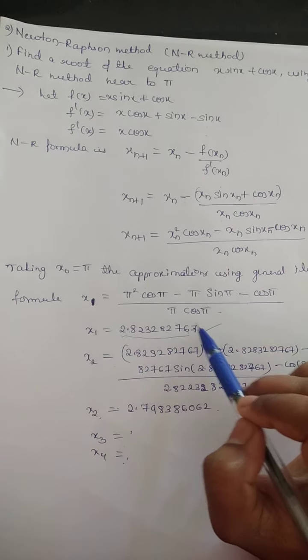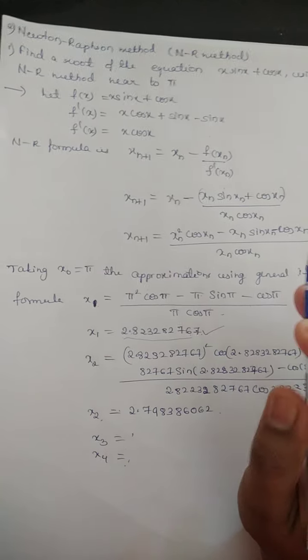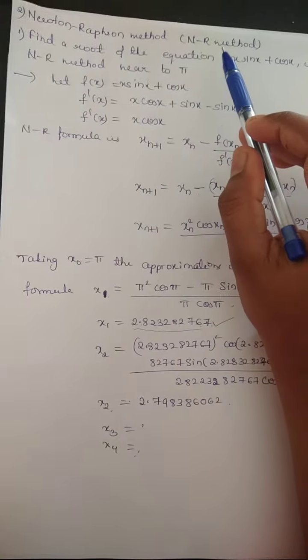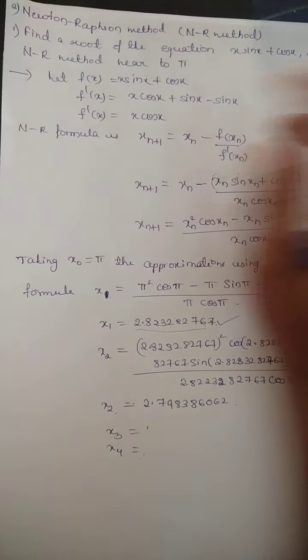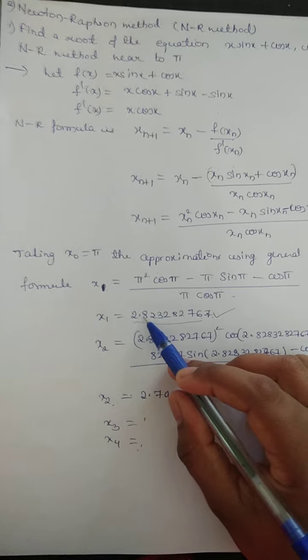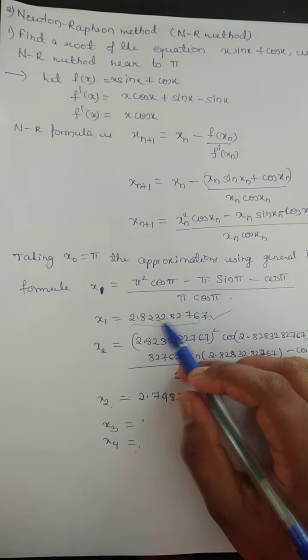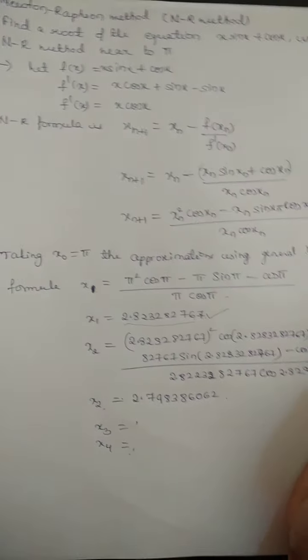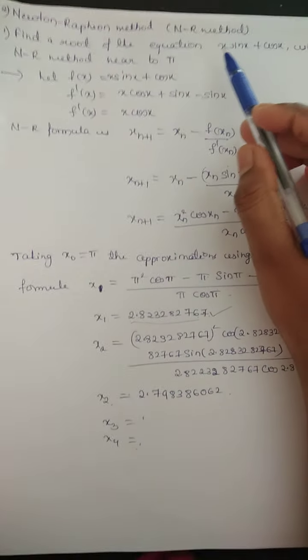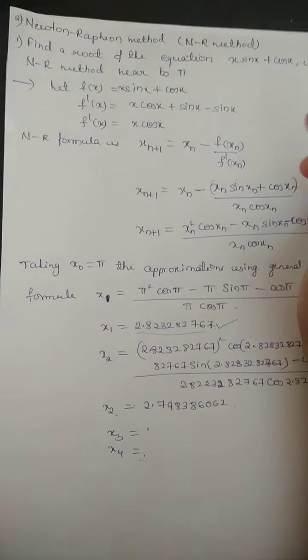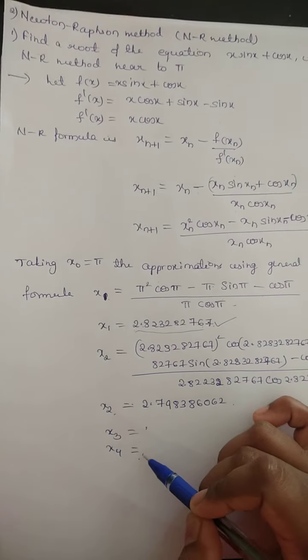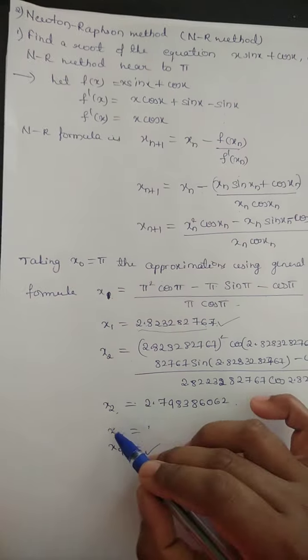After the decimal point I have taken 9 digits. Sometimes they have not mentioned in this problem. Sometimes they mention correct to 4 decimal places, correct to 5 decimal places. If not mentioned, you can take 4 decimal places. That is enough. And sometimes they mention up to 4 iteration or 5 iteration. Here it is not mentioned like that, so you can stop till 4 iteration or 3 iteration.